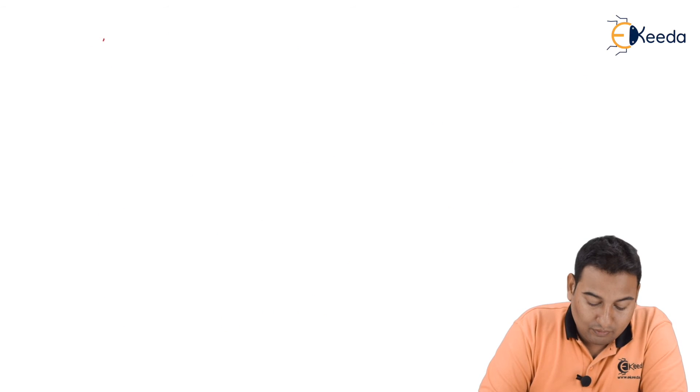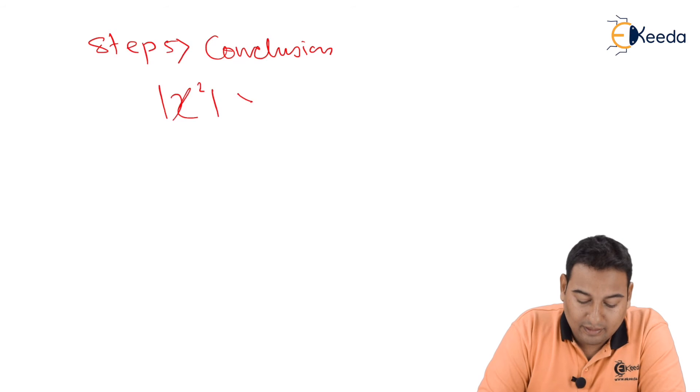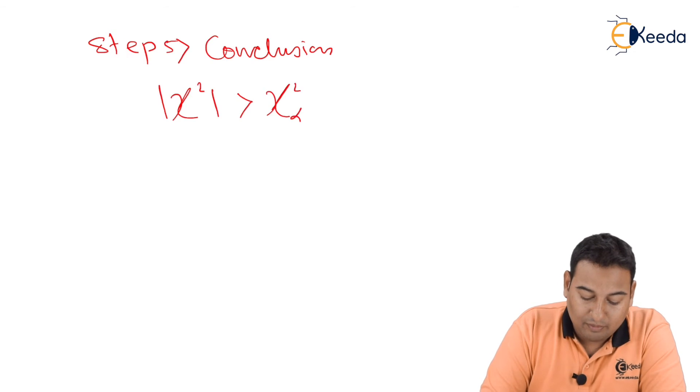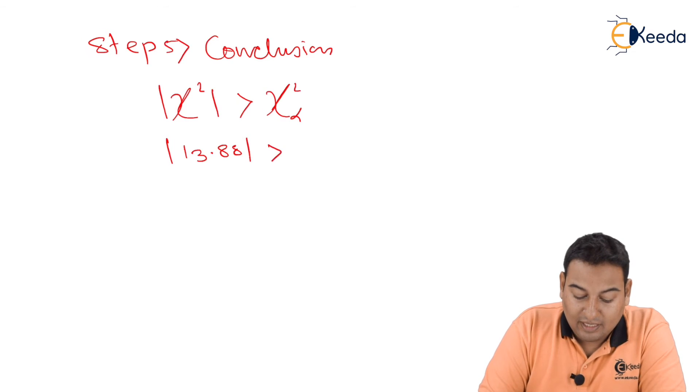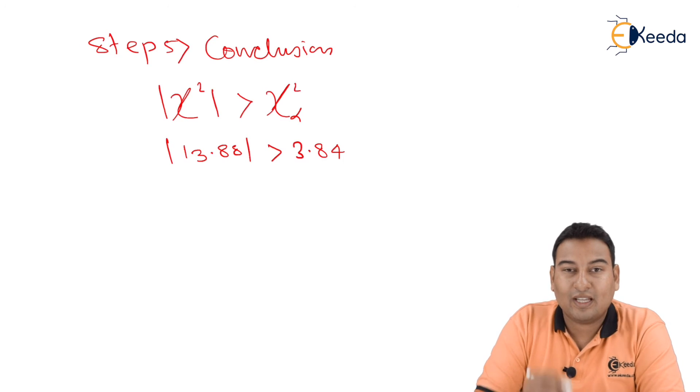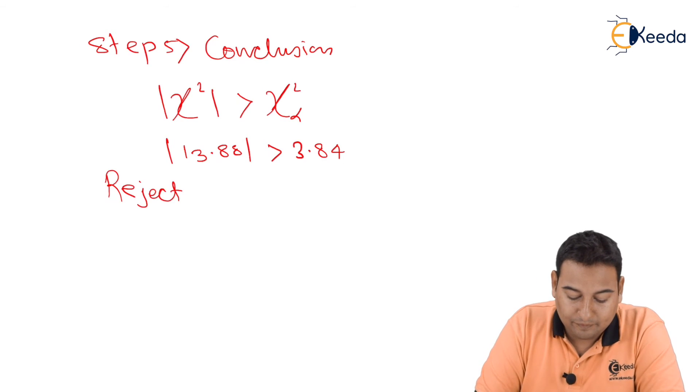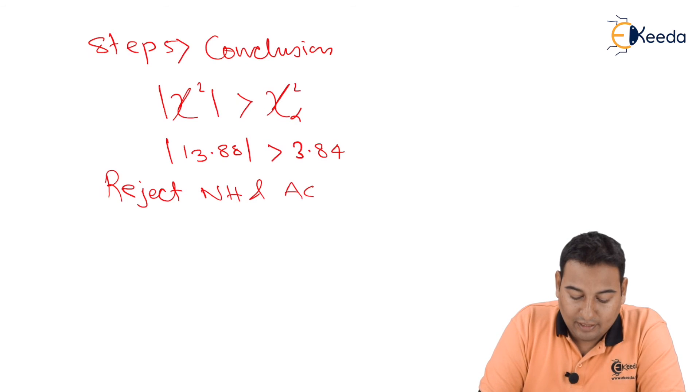Now we are moving to the last step, the conclusion part. Here, mod of chi square is greater than chi square alpha, because mod of chi square is 13.88 and chi square alpha is 3.84. So what is the conclusion? If it is greater, reject null hypothesis and accept alternate hypothesis.